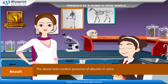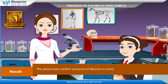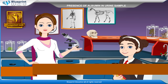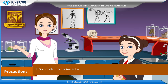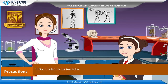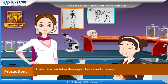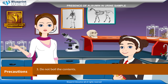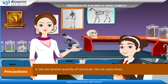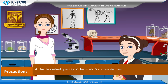Result: The above tests confirm the presence of albumin in urine. Precautions: Do not disturb the test tube. Wash the test tubes thoroughly before and after use. Do not boil the contents. Use the desired quantity of chemicals and do not waste them.